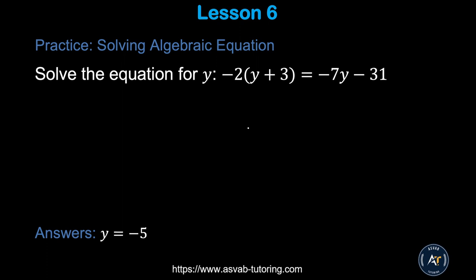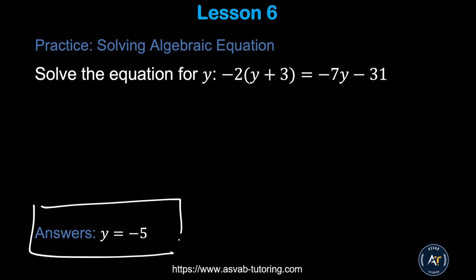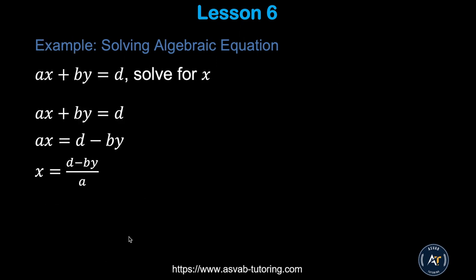Here's another algebraic equation: −2(y + 3) = −7y − 31. Use the same approach as before — expand the parentheses, then move variables to one side and constants to the other. Pause the video, try it yourself, and make sure you get the correct answer.